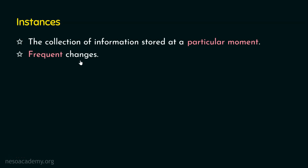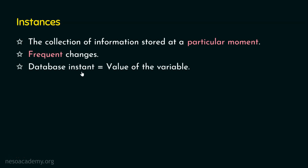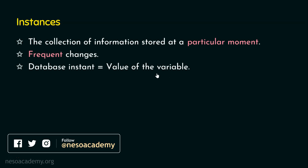How is this related to the analogy we have seen? The variable definition or type definition is equivalent to the schema. The value present in the variable is equivalent to the instance. So a database instance is equivalent to the value of the variable in the analogy, because the value of the variable keeps changing as per the need, and obviously databases can grow and shrink. I hope now you are clear with what an instance is.